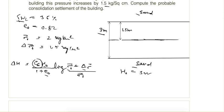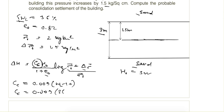It is not a remolded clay because it is a foundation material, so it is undisturbed. For undisturbed clay, CC is given in terms of liquid limit as CC = 0.009 × (WL − 10). So CC = 0.009 × (36 − 10) = 0.234.